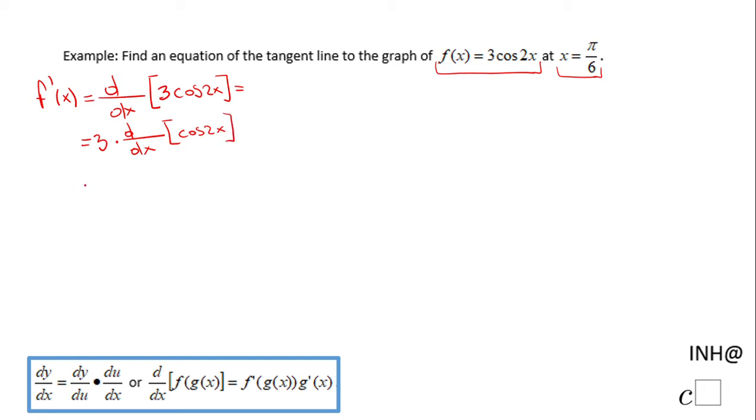Then I'm going to use the chain rule, which tells me the derivative of cos(2x) is negative sin(2x). And then by the chain rule that you see down here, the derivative with respect to x of the inside function, which is 2x.